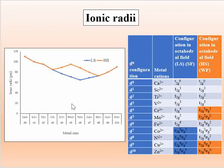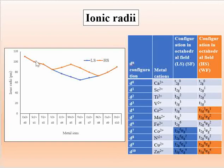The order of ionic radii for 2+ and 3+ ions can be explained using CFSE. In the low spin complex, there is a minimum at iron(II) and then the radii increase up to zinc. In the case of high spin complexes, the radii decrease up to V²⁺, then increase up to Mn²⁺ reaching a maximum, then decrease up to nickel, and after nickel they increase again. This trend can be explained on the basis of CFSE.